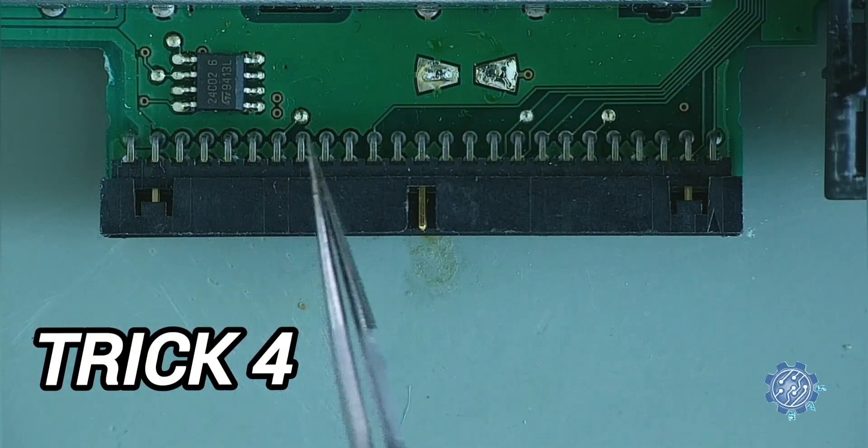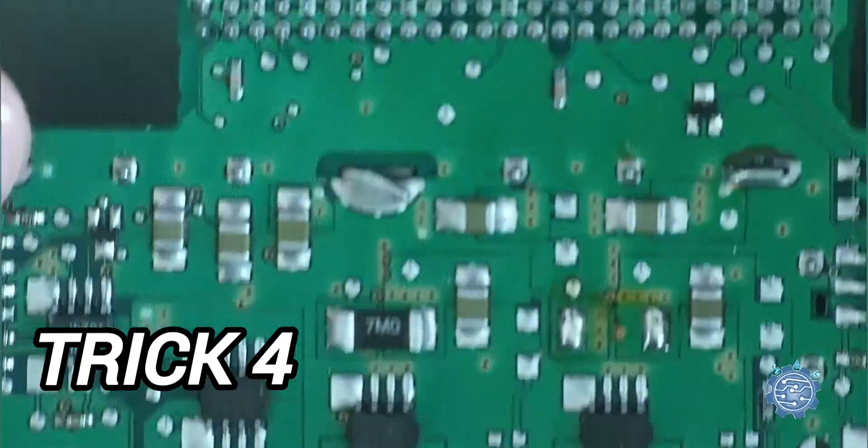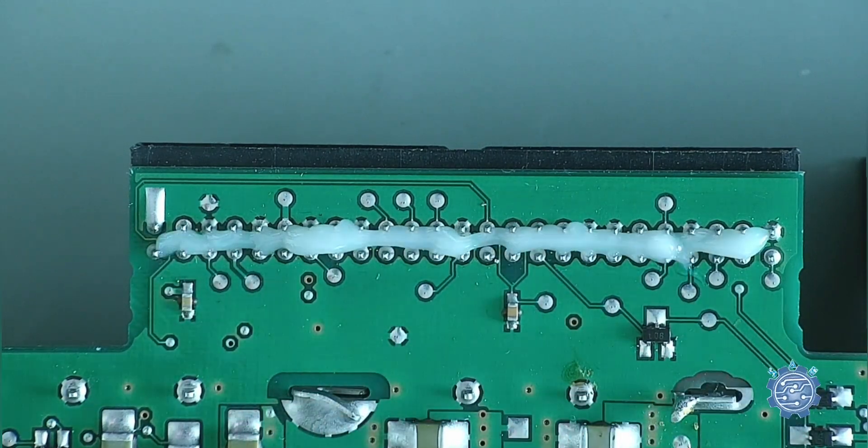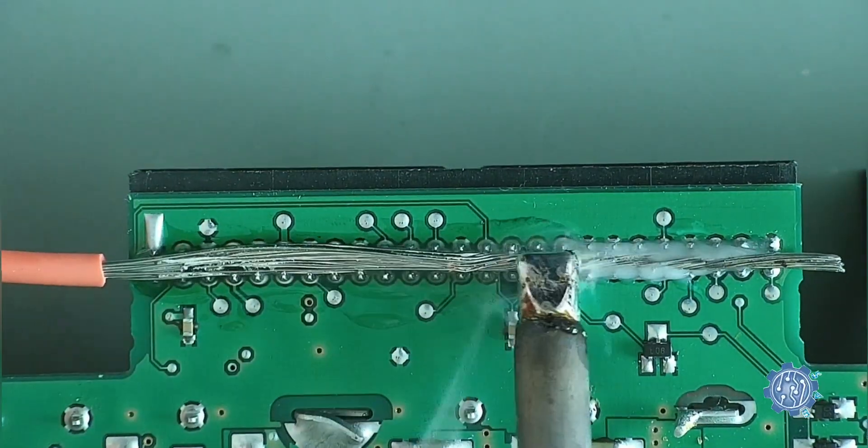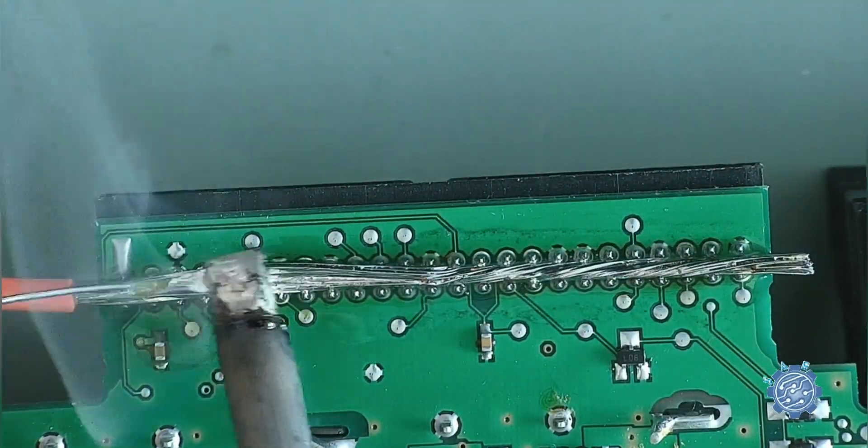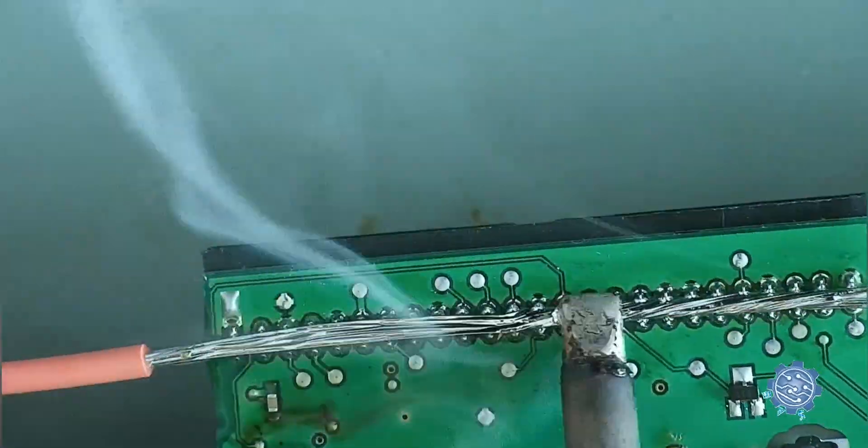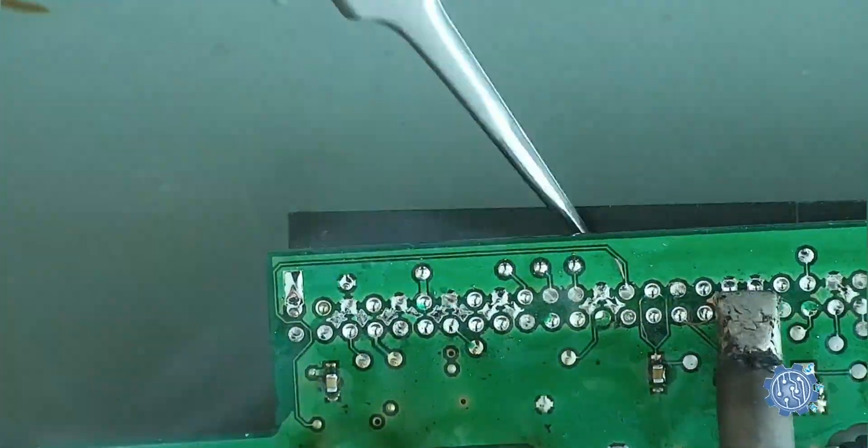De-soldering without a hot air station. No hot air station, no problem. Take a braided cable, strip it, apply flux and solder to keep the wire warm. This technique allows you to extract the connector from its holes.